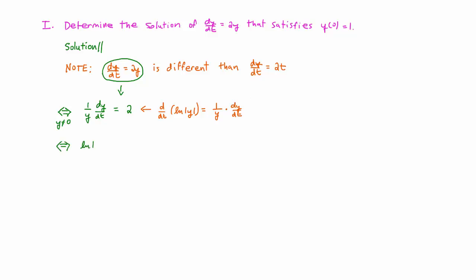Integrating, we get that the ln of the absolute value of y equals the integral of 2, which is 2t plus c.